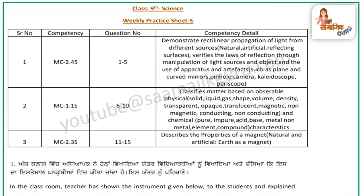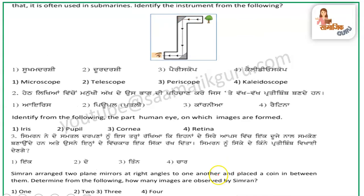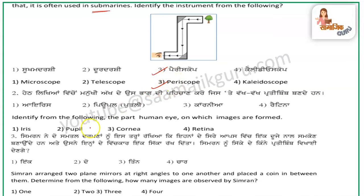The first question is: in the classroom, the teacher has shown an instrument to the students and explained that it is often used in submarines. The teacher has shown this instrument and said it is used in a submarine. So, which instrument is it? This is a periscope.